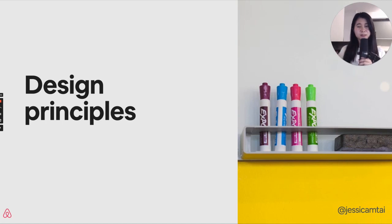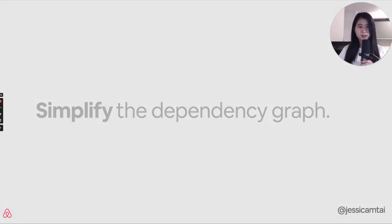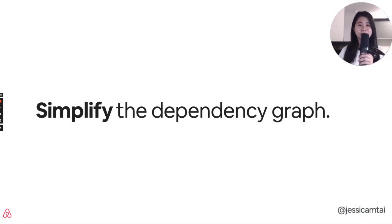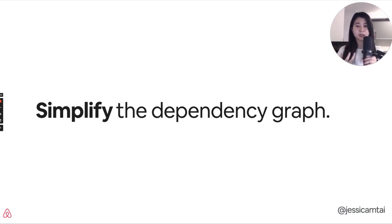This brought us back to the drawing board: how could we improve upon our service-oriented architecture? It distilled down to simplification. We needed to simplify our dependency graph — reduce the number of service dependencies, remove circular dependencies, and make services that were more modular and more clearly defined.